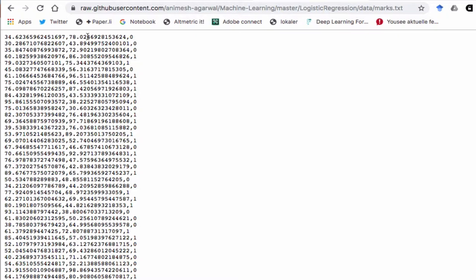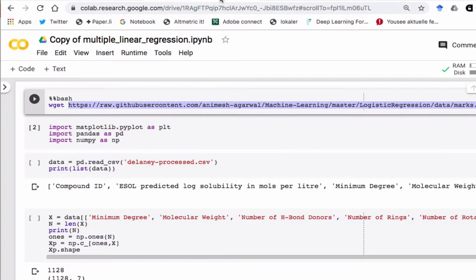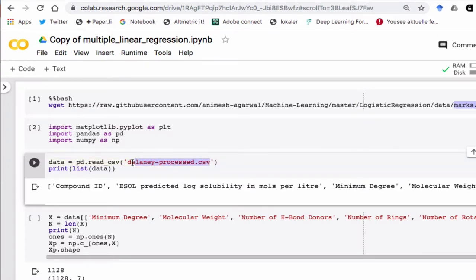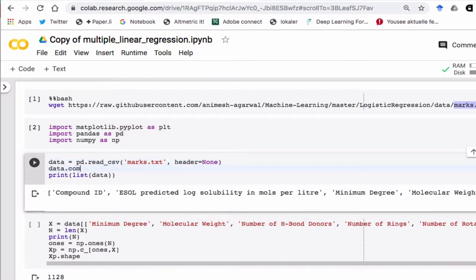What we don't see here are any headers. So if I take this here now and read this in instead, then I have to tell pandas that there are no headers. And then I have to add my own headers. So my columns are let's say exam 1, the first column exam 2, and the second column and then whether the student was admitted or not.